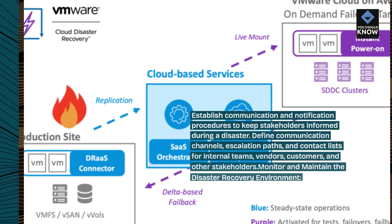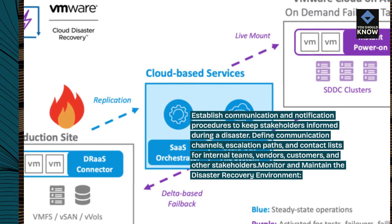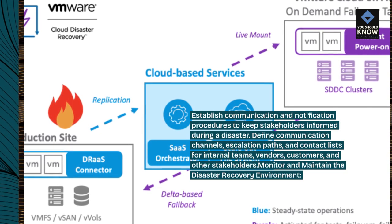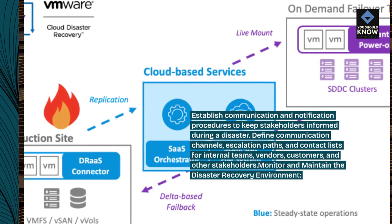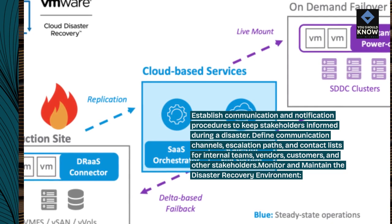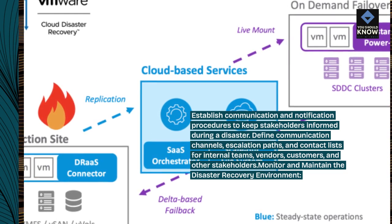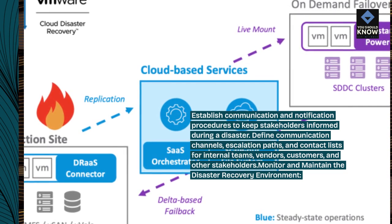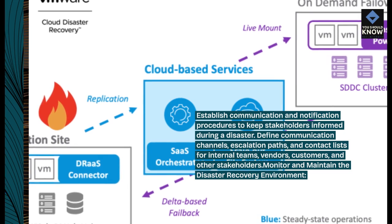Establish communication and notification procedures to keep stakeholders informed during a disaster. Define communication channels, escalation paths, and contact lists for internal teams, vendors, customers, and other stakeholders.